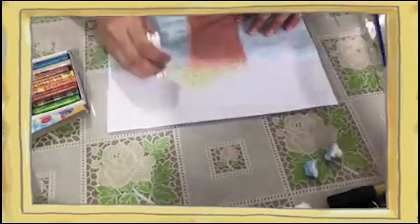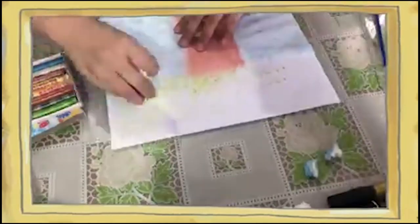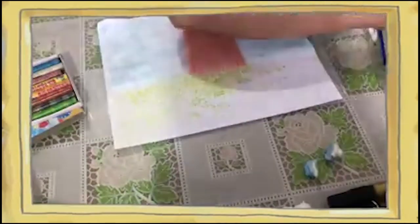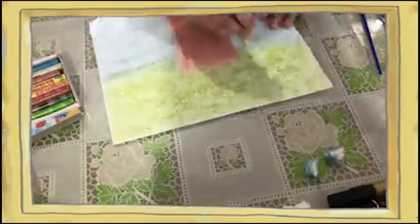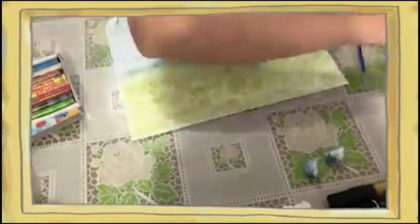After that, we will paint the leaves using the cotton buds. Just like the sky, you have to dab the cotton buds repeatedly. You can also mix green, yellow, and orange to make it more colorful.